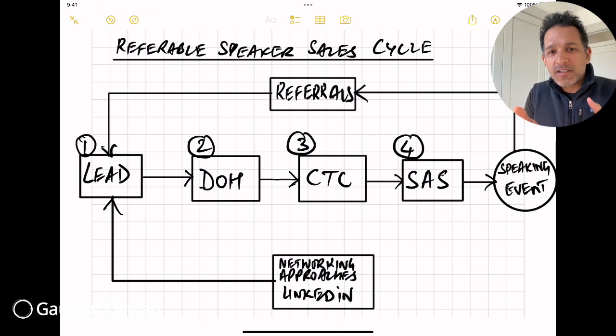And the referrals which I've marked at the top of the image with an arrow goes back all the way to a lead generating the next sales cycle. So that's how we build our referable speaking career, by doing this cycle again and again over time, increasing the velocity and volume and value of the sales cycle.